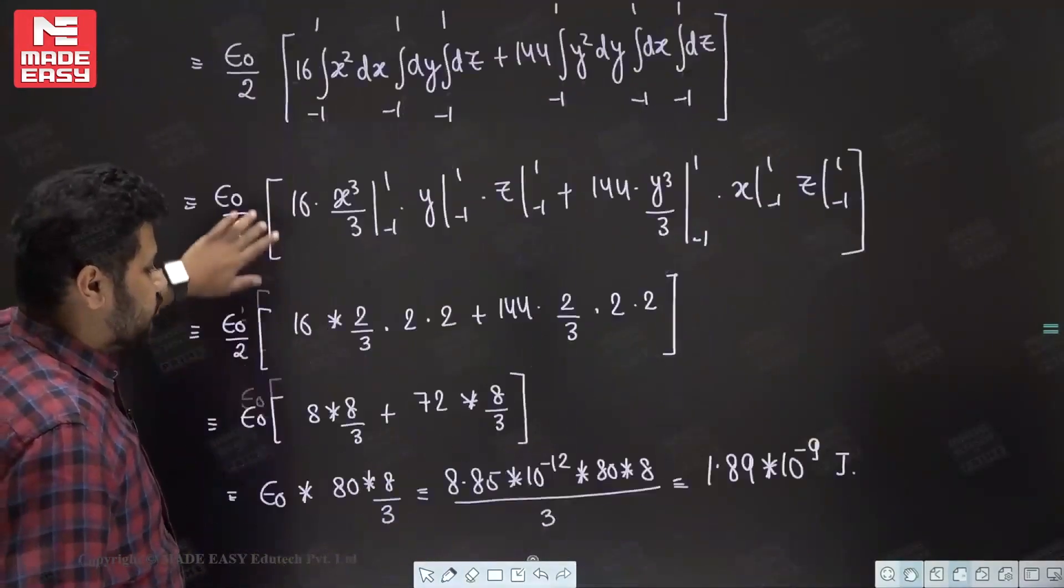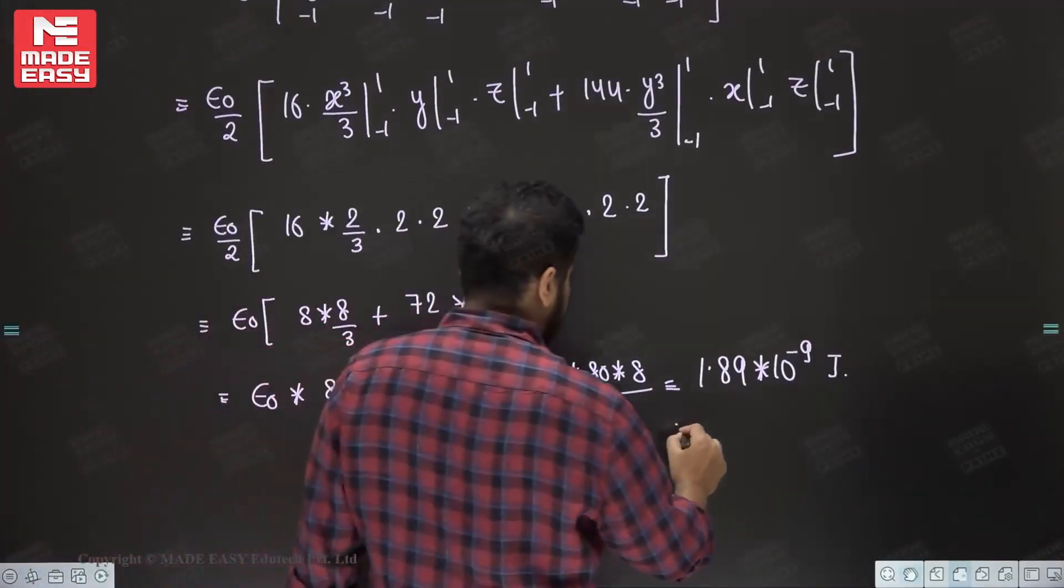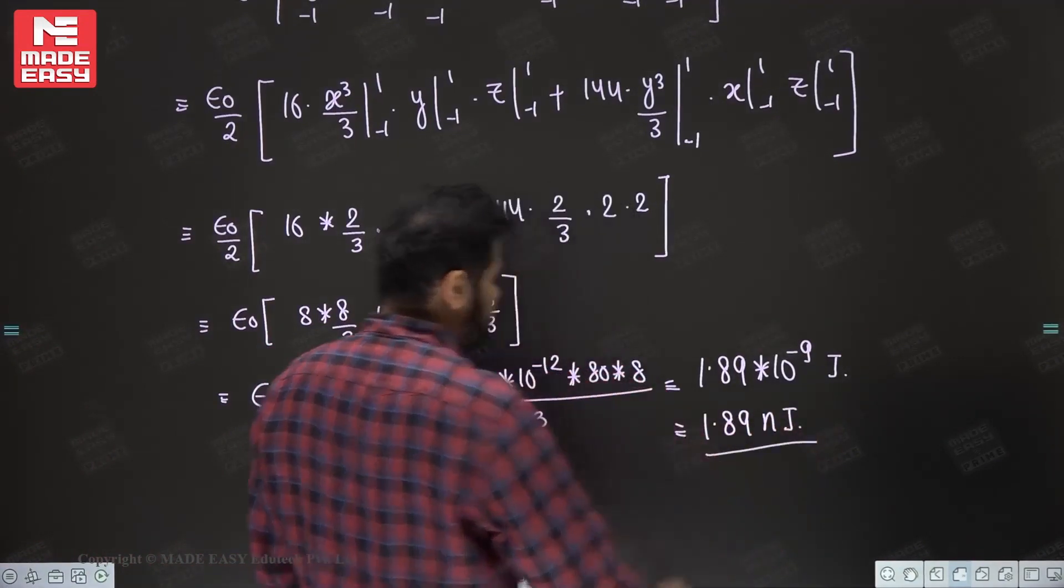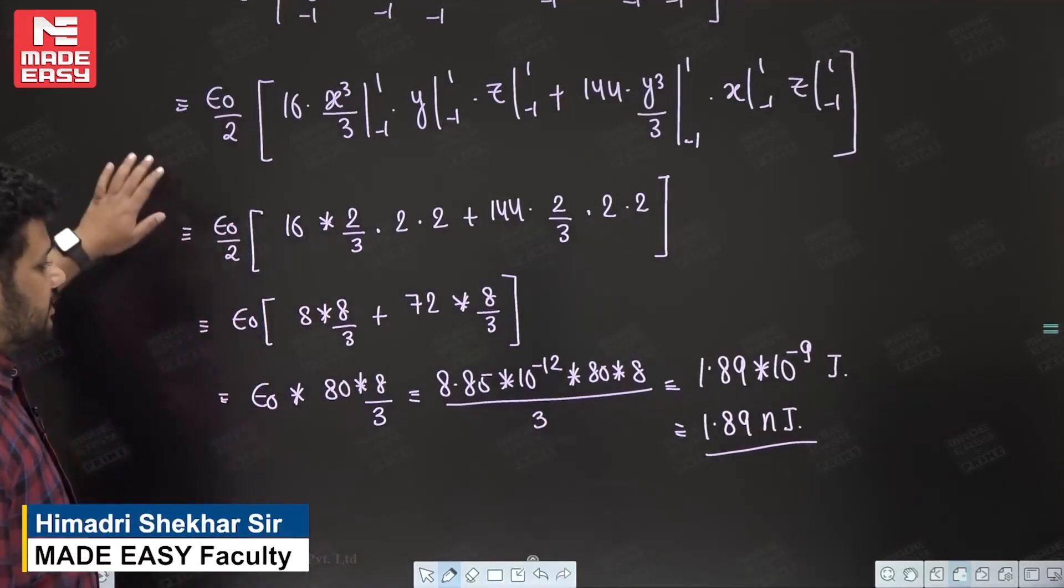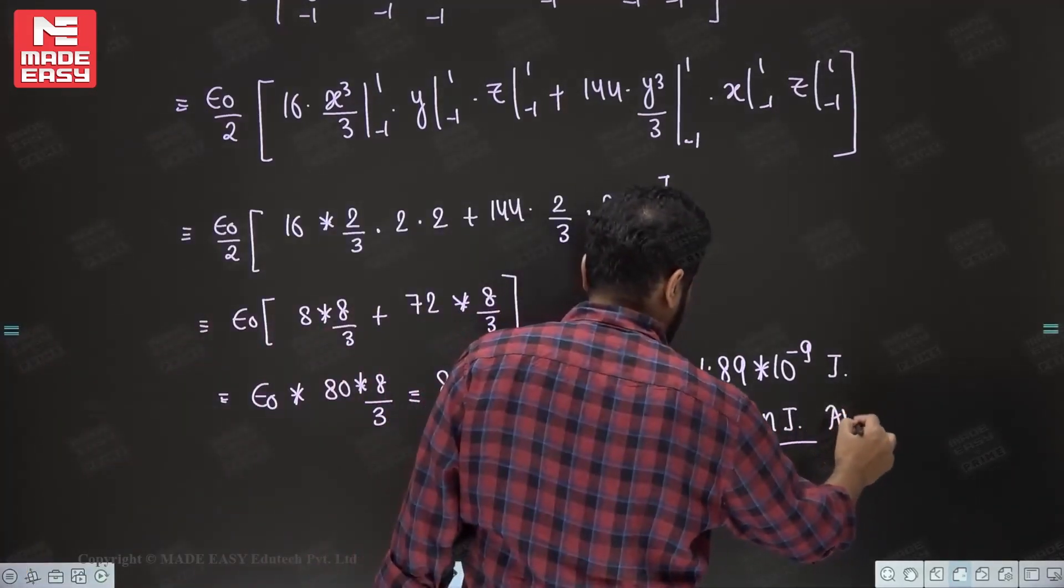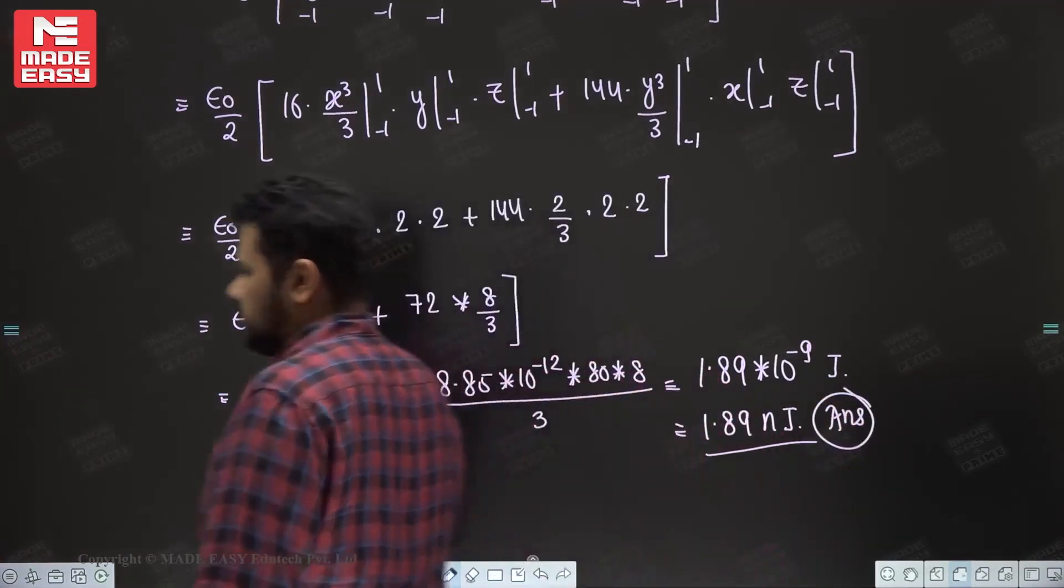So what is the answer? It is your 1 point, so I can say that it is your 1.89 nanojoules. Answer will be 1.89. So this is the final answer.